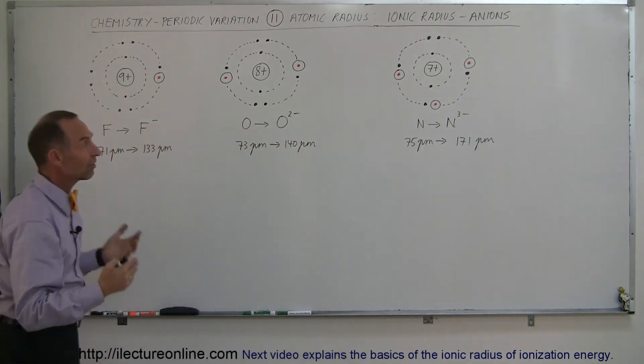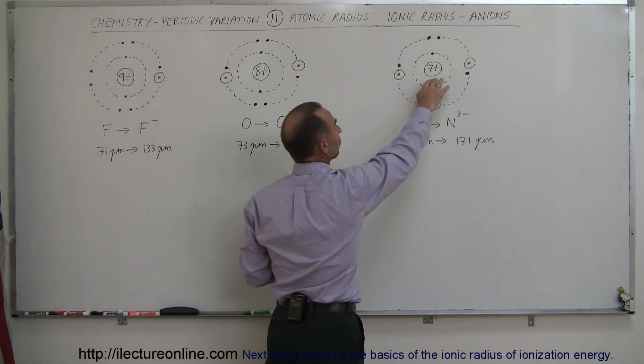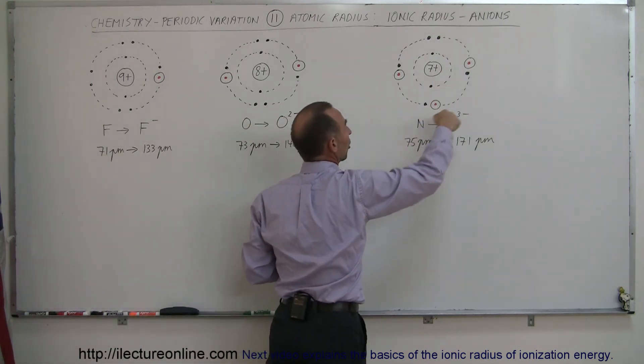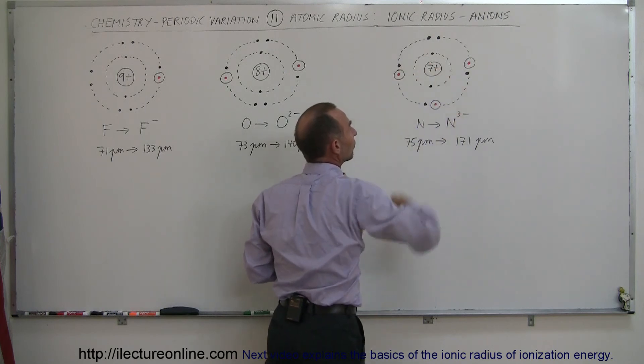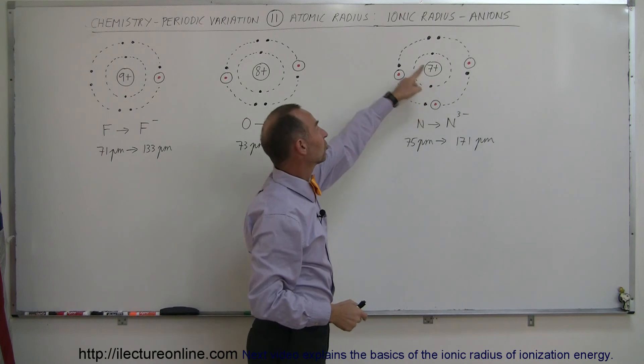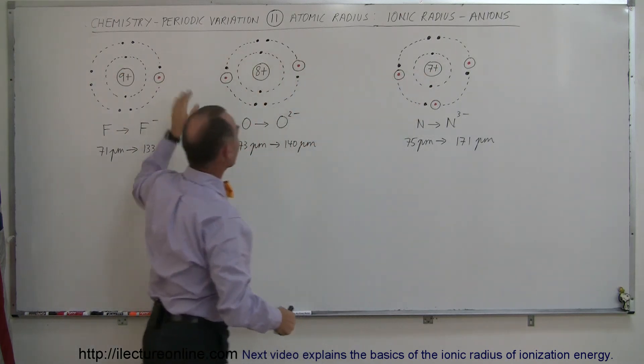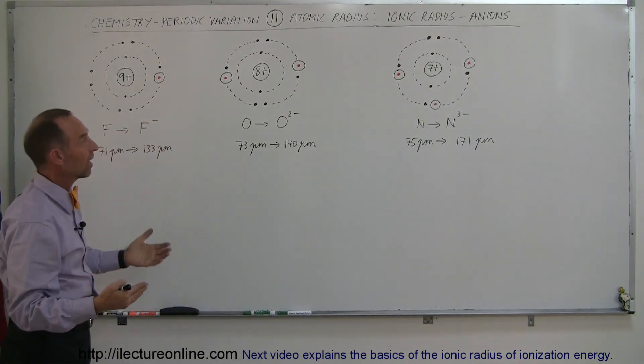So you can see that the ultimate size of the ions very much is a function of how much charge is in the nucleus, how many additional charges are in the outer layer of the atom, basically the outer energy level, and how much screening there is. Since there's no additional screening here between those three atoms, you see the screening effect is the same.